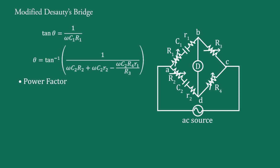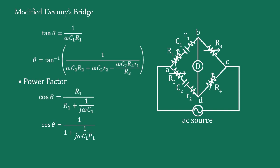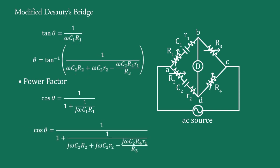For the power factor of the R1-C1 series connection, cos θ equal to r1 divided by (R1 + 1/jωC1). Using the previously calculated value of ωC1R1, we get cos θ equal to 1 upon (1 + 1/(jωC2R2 + jωC2·r2 − jωC2·R4·r1/R3)).